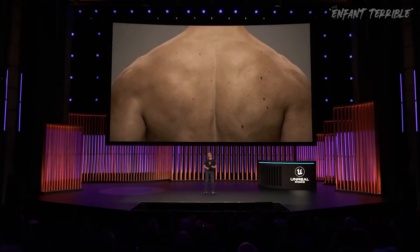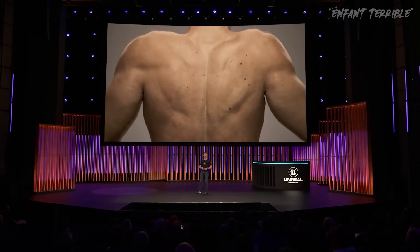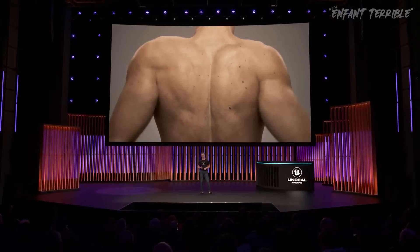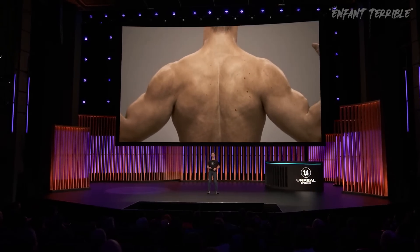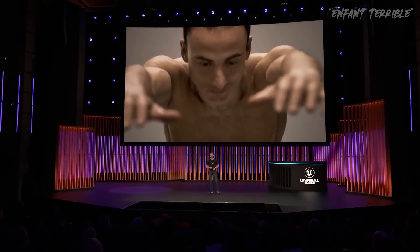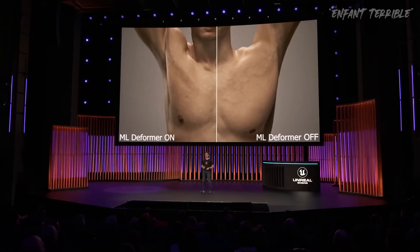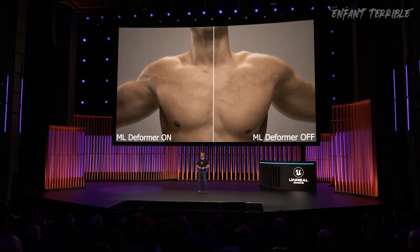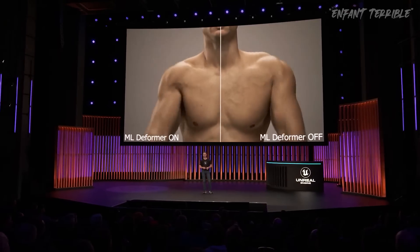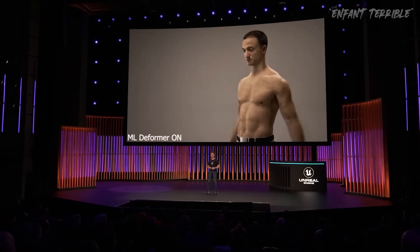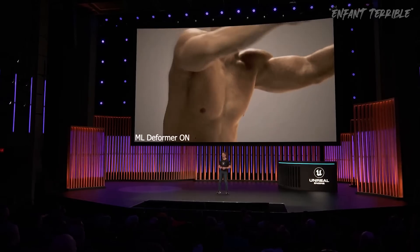Wouldn't it be great if we could have this level of deformation complexity but able to evaluate in real time? What we are now able to do is use machine learning to compress that simulation data into a format that can be evaluated at runtime. You are looking at our ML character with deformations driven by full muscle, flesh, and cloth simulation from Houdini. It's running in real time on PS5, taking around 1/10th of a millisecond on CPU for network inference and around 1 millisecond on GPU for morph target evaluation.